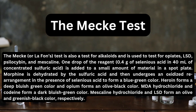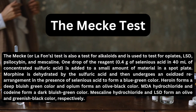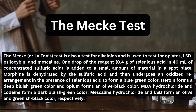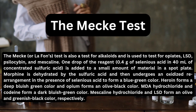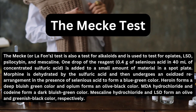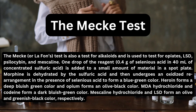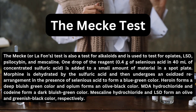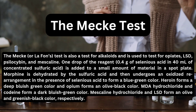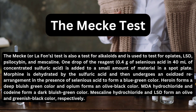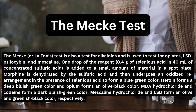The Mecae, or Lafans, test is also a test for alkaloids and is used to test for opiates, LSD, psilocybin, and mescaline. One drop of the reagent — 0.4 g of salineous acid in 40 ml of concentrated sulfuric acid — is added to a small amount of material in a spot plate.